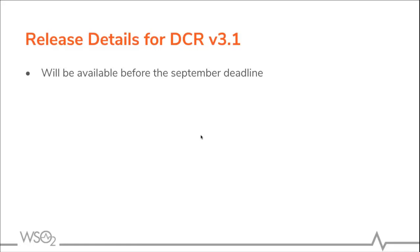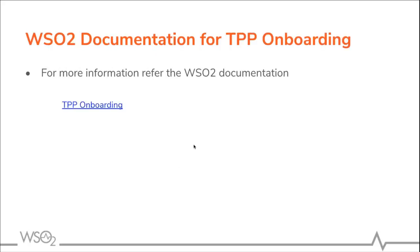Regarding release details for DCR version 3.1 and version 3.2, currently we are in the process of developing version 3.1, so it will be available before the September deadline. DCR version 3.2 will also be available before the September deadline in the WSO2 Open Banking solution. For more information on TPP onboarding with WSO2 Open Banking, you can refer to the following documentation.